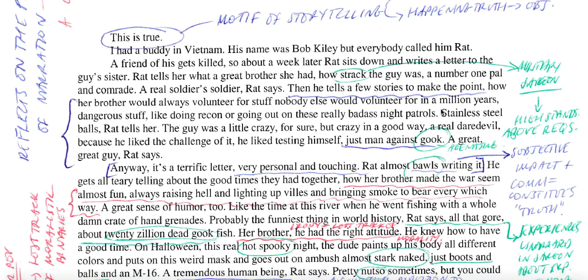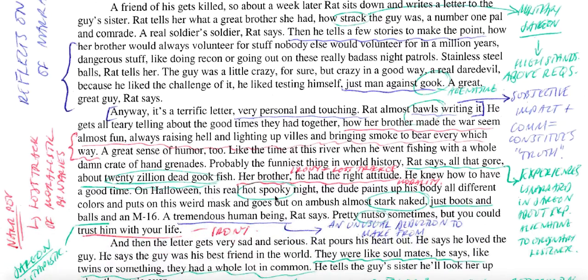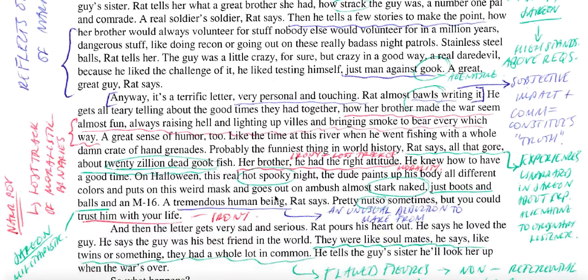This language is extremely informal, and that's partly what creates a sense of authenticity. 'Stainless steel balls,' Rat tells her — this language is deliberately idiomatic and based on slang. 'The guy was a little crazy for sure, but crazy in a good way. A real daredevil, because he liked the challenge of it. He liked testing himself. Just man against gook, but great guy,' Rat says.